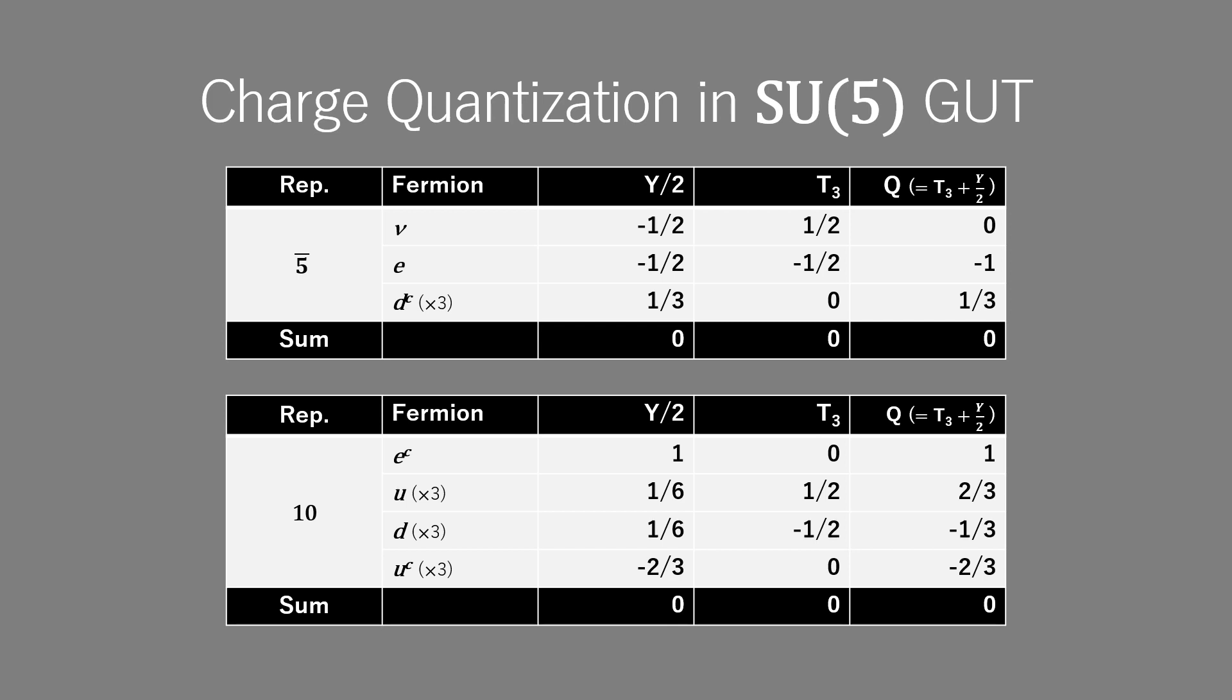This is in sharp contrast to the standard model, where no constraint on Y, hence Q, could be imposed. For the constraint of tracelessness the sum of the charges in each multiplet must be zero, and putting quarks and leptons into the same multiplet forces the charge quantization.